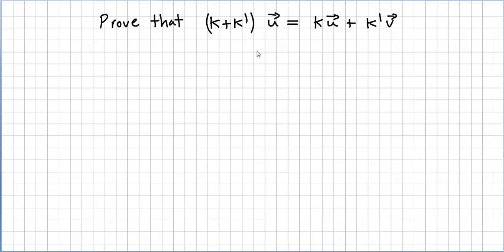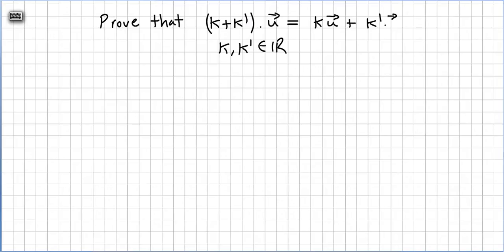This time we are asked to prove that (k + k'), where k and k' are real numbers — so these are scalars — times vector u, equals k times u plus k' times u. Vector u is of course in R^n space.